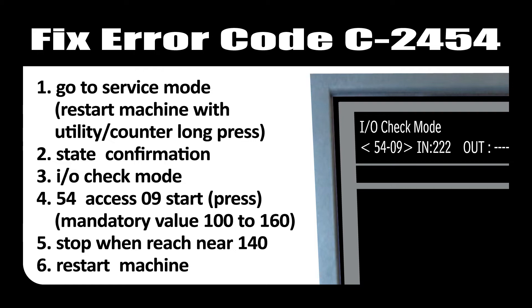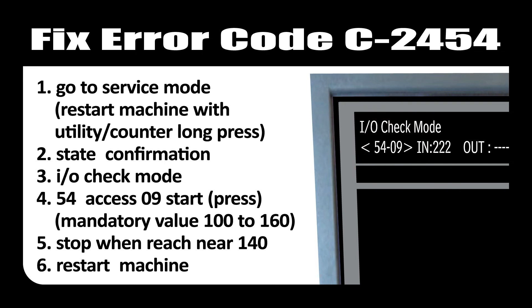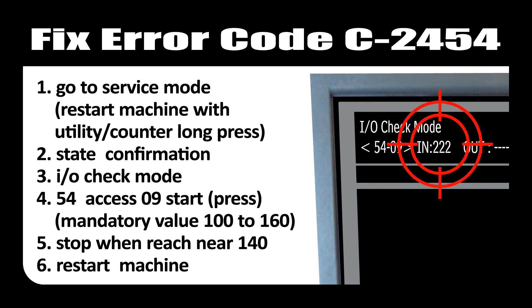Simply start the machine with long press utility/counter, then select state confirmation, then select IO check mode, then press 54 access 09 and press start. Stop when it reaches near 140. The mandatory value is 100 to 160. Restart the machine.